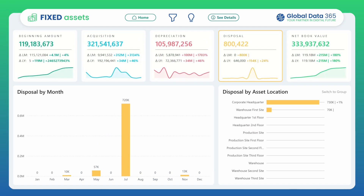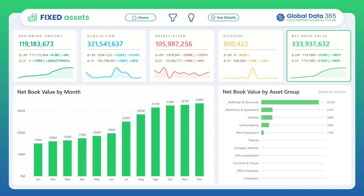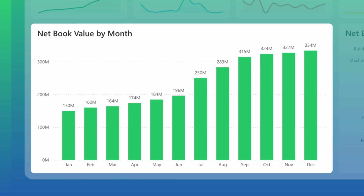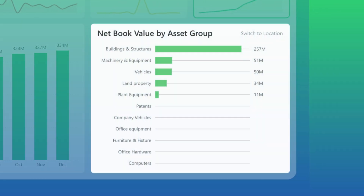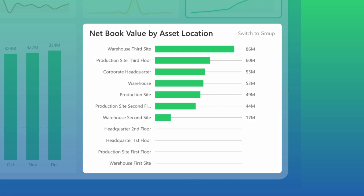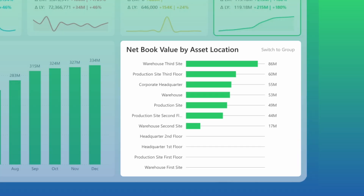Finally, net book value by month highlights how your asset value evolves over time. And with net book value by asset group, you'll see residual value distribution across categories.